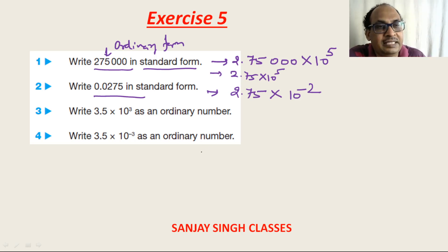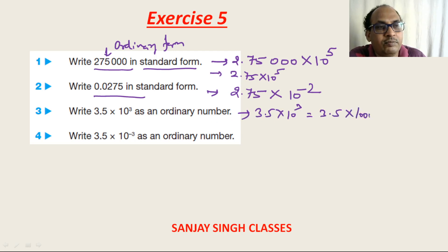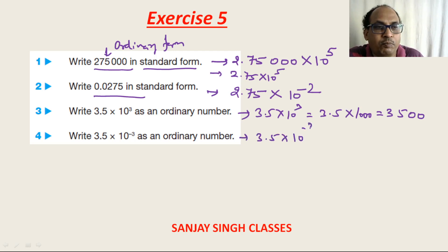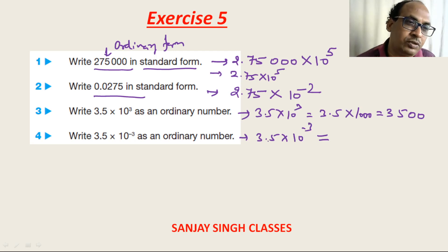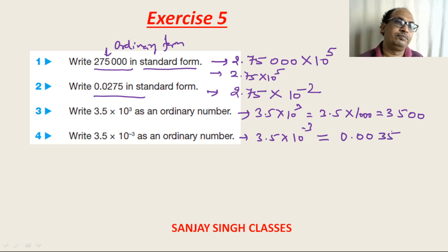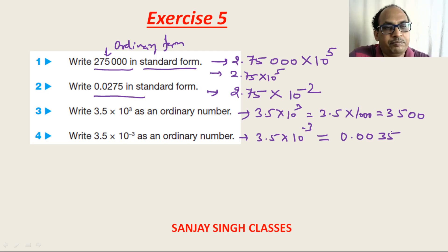Question 3: Write 3.5 × 10³ as an ordinary number. 3.5 × 1000 = 3500. Question 4: Write 3.5 × 10⁻³ as an ordinary number. We shift the decimal 3 places to the left, giving 0.0035.